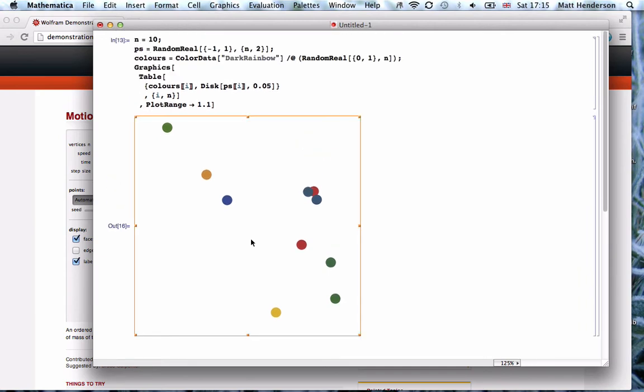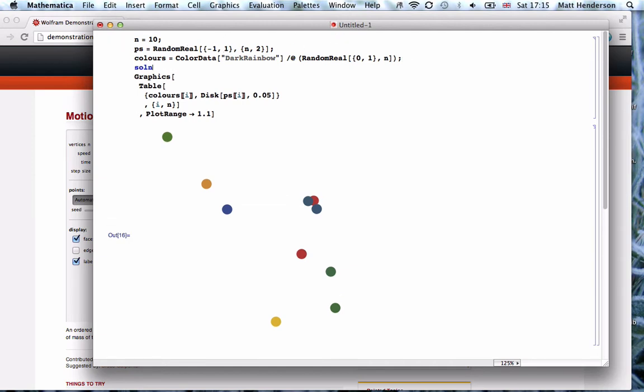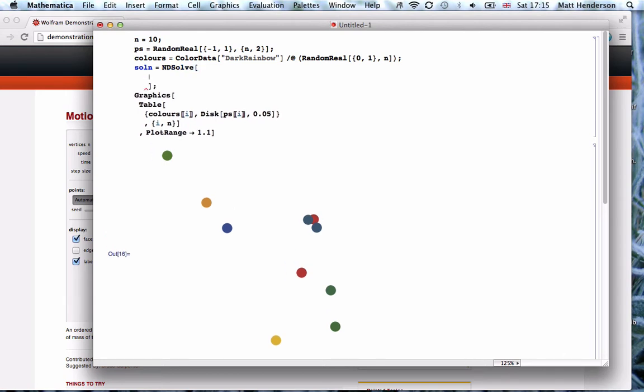This is just the start. We want to say the first one gets attracted to the second, the second to the third, and so on, and loop it back so the tenth one is again attracted to the first. I think we'll use NDSolve to solve the motion of each point.